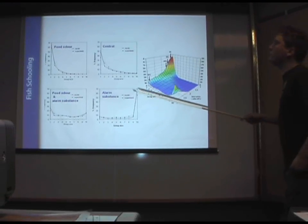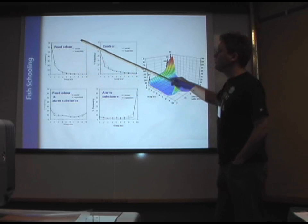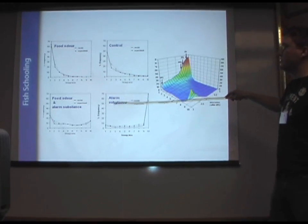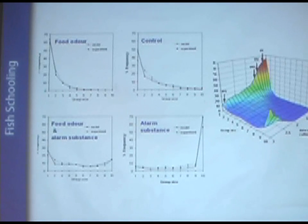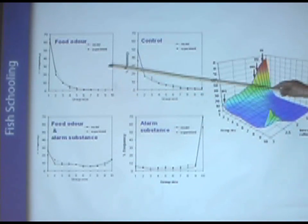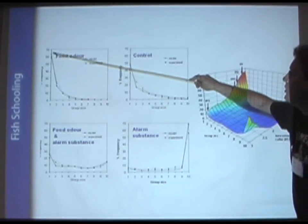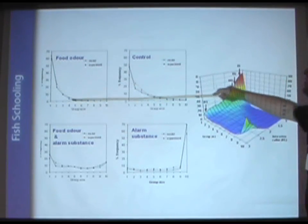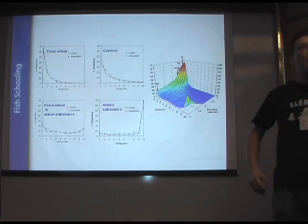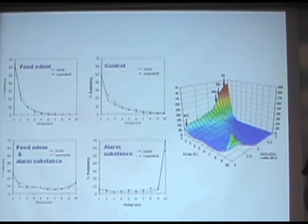Here's some experiments I've been doing with Jens Kreuser at University of Leeds, where we've been putting food odor in the water, so the fish think there's something to eat. Alarm substance is the opposite, they think a predator's present, but it isn't really. And we can look at control and both together. And we can look at the distribution of group sizes in the model as a solid line, and the dotted line is the experiment. So we get a very good match from these simple models with our simple experimental systems in the laboratory.